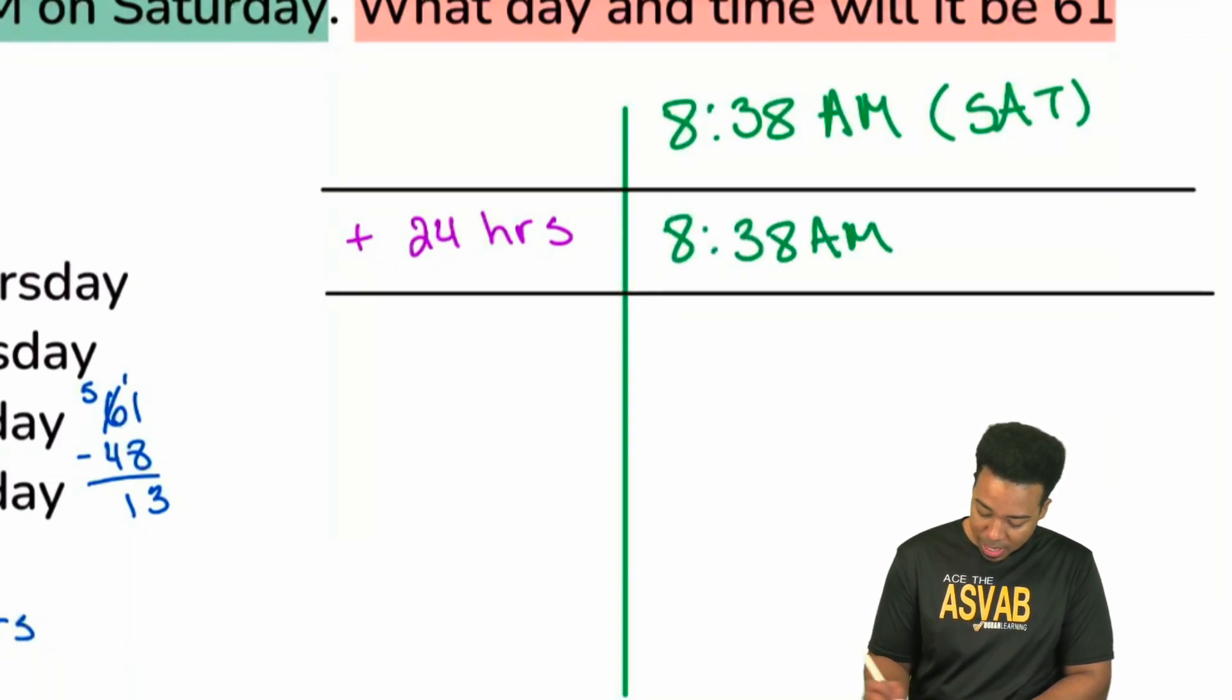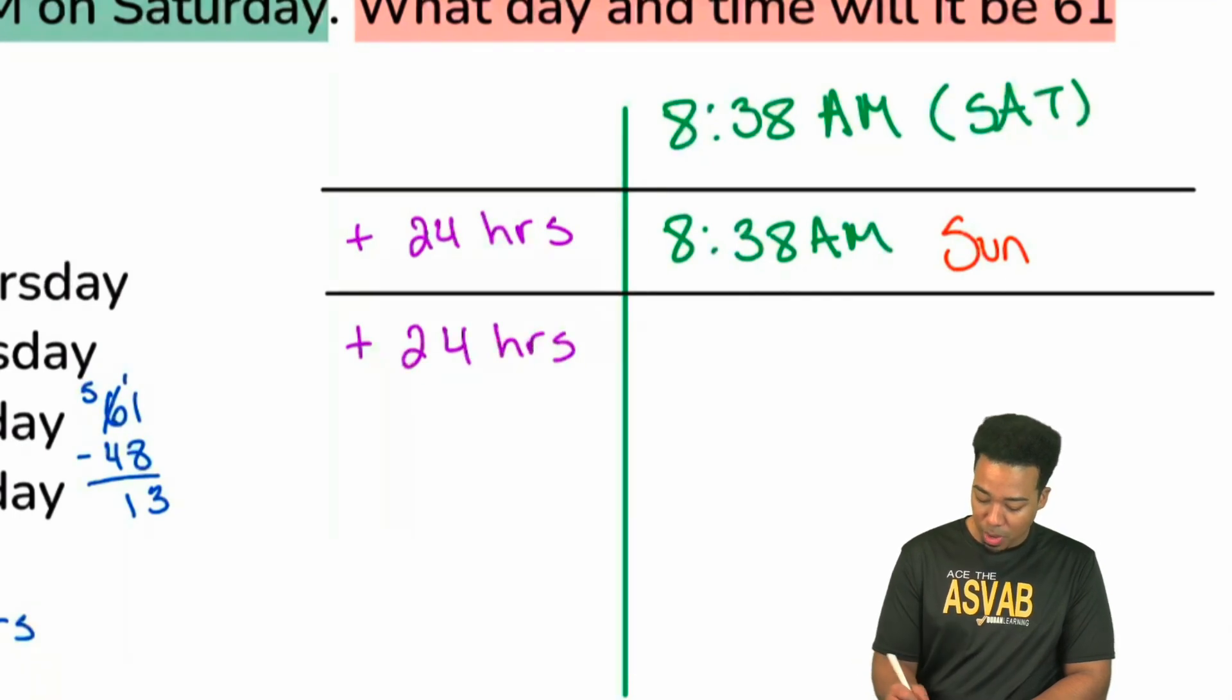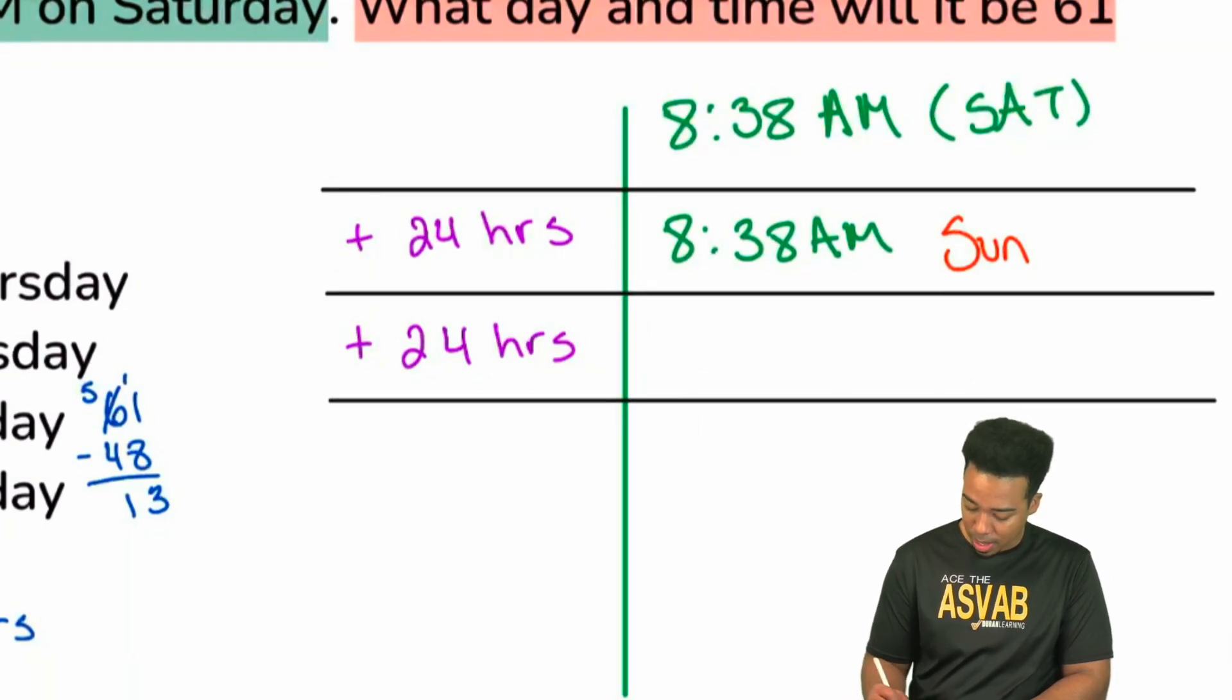We have 8:38 AM, but now it is Sunday. If we add another 24 hours, we have 8:38 AM on what day? That's right, it's going to be Monday - 8:38 AM on a Monday.